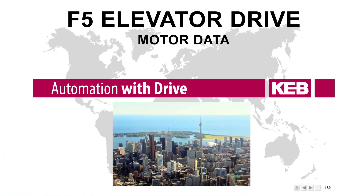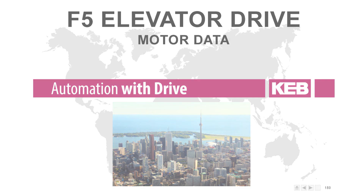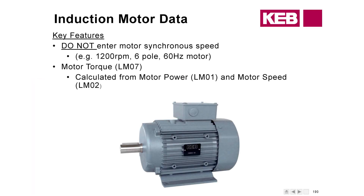Motor data between both the induction and permanent magnet motors will be slightly different. Starting with the induction machine: we don't want you to enter in the synchronous speed — that 1200 RPM — in the motor data. We should be entering in the slip speed, which is the actual rotor speed. The synchronous speed is the speed at which the magnetic field is rotating.